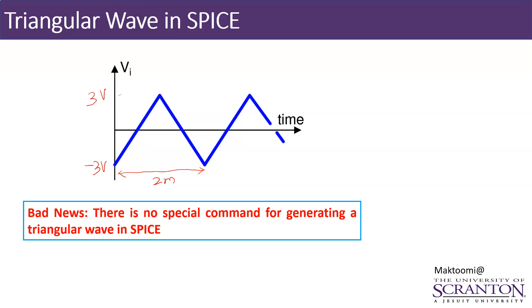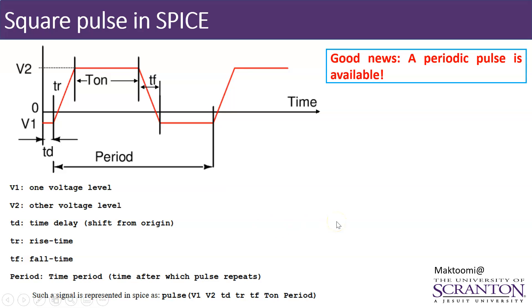So if you want to generate this kind of waveform in SPICE or LT-SPICE, there is no specific command for doing that. However, we have access to something called the square pulse or periodic pulse, which we have talked about in previous tutorials. So I will go ahead and review this command here.